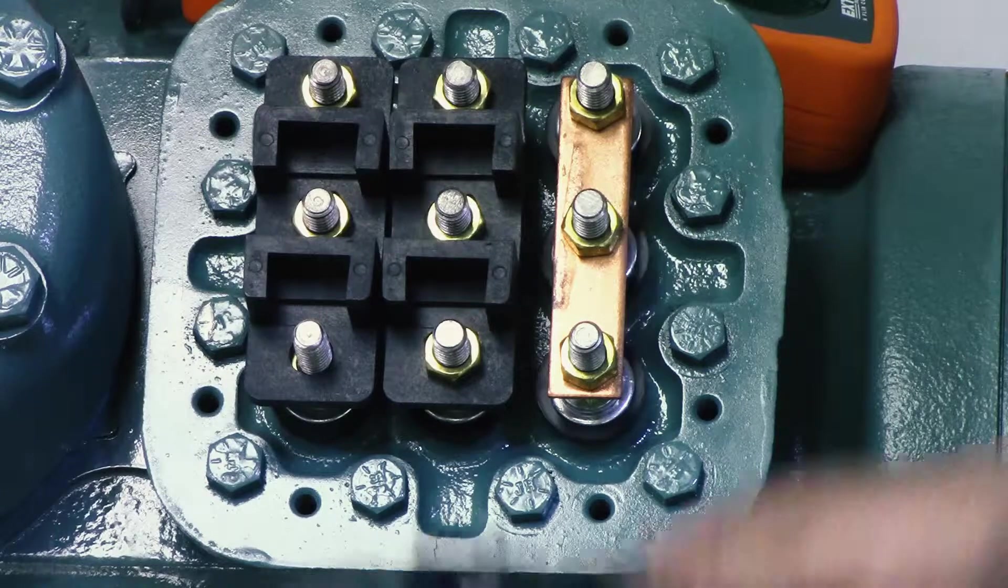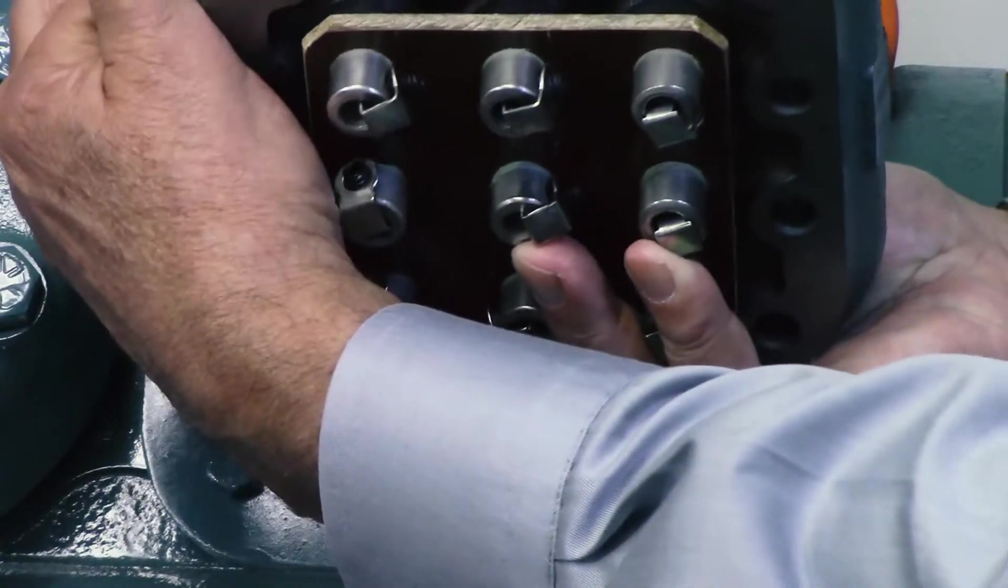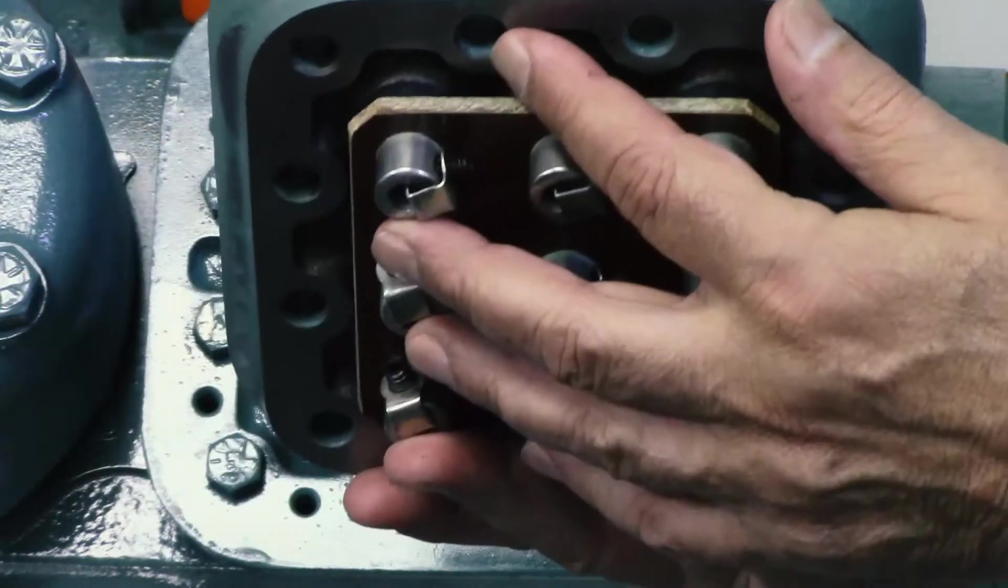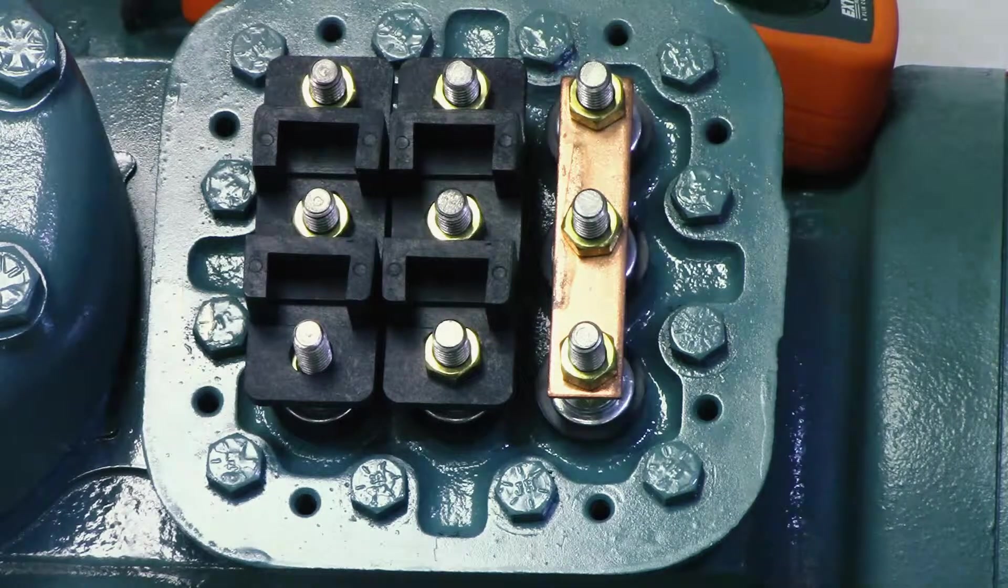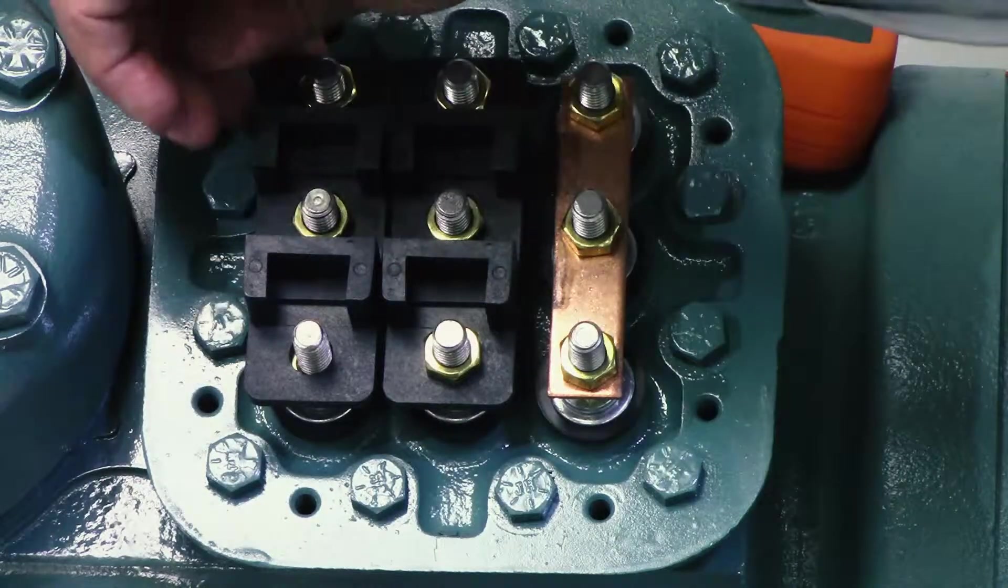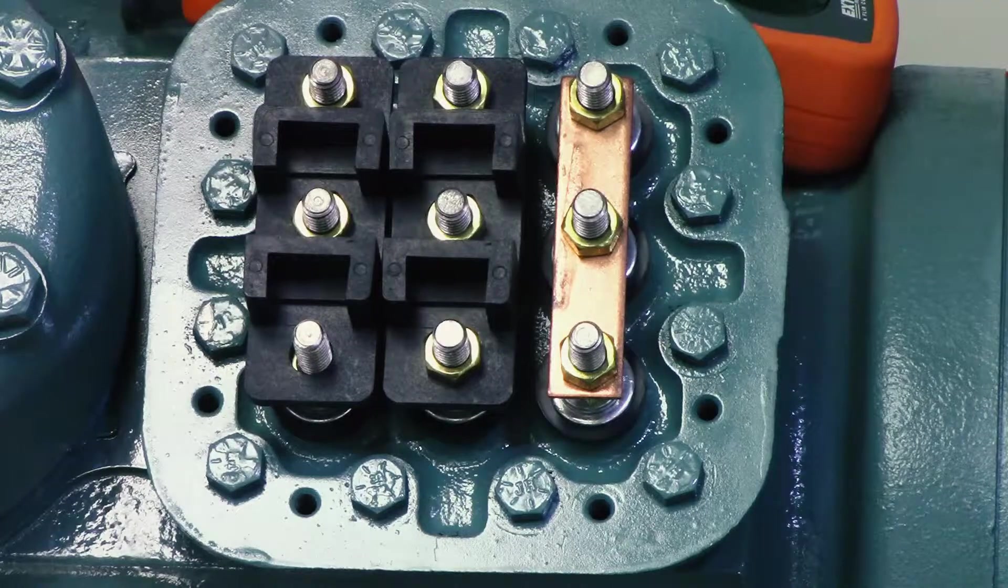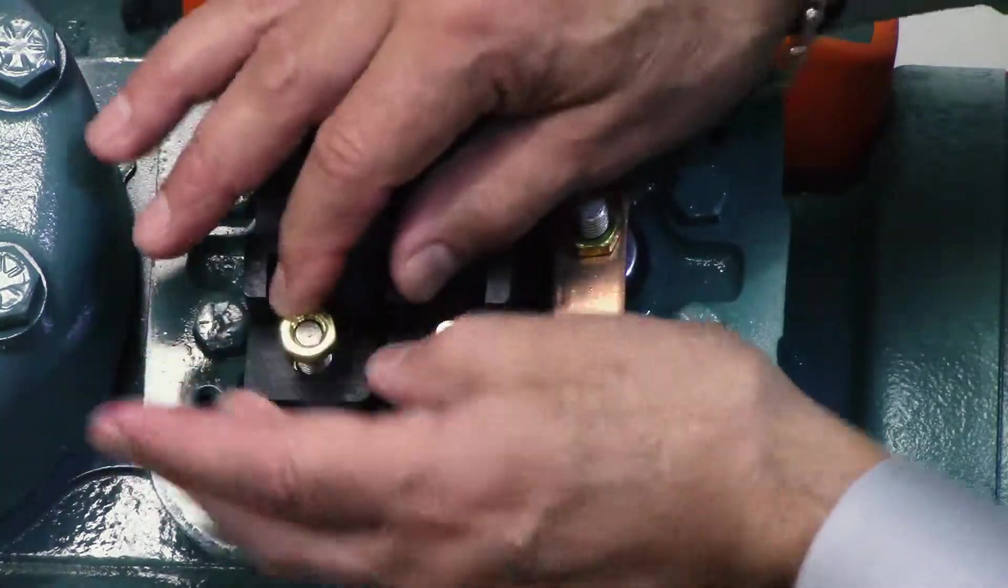The nuts that are under the plate, they're pre-torqued and should never be disturbed. Even if you have to remove these nuts, you have to make sure you're not going to disturb the back nut. That's very important.